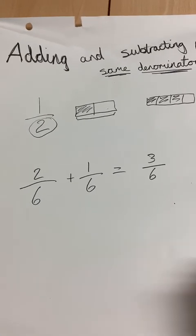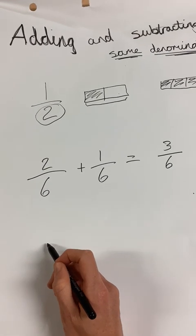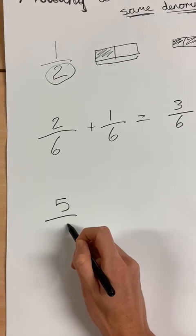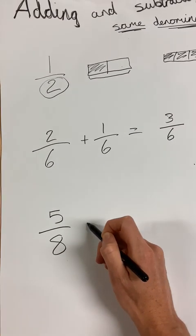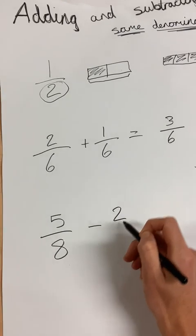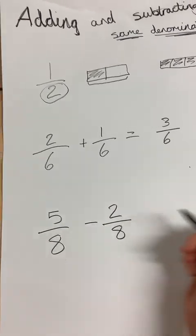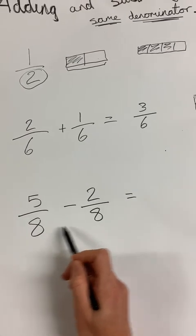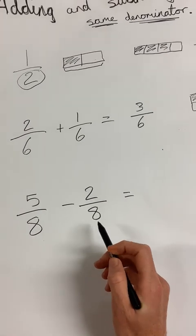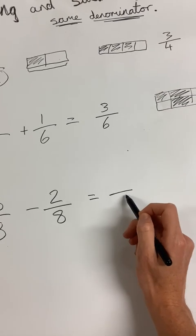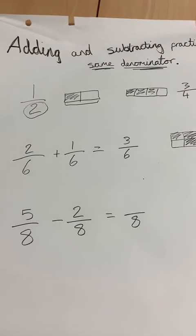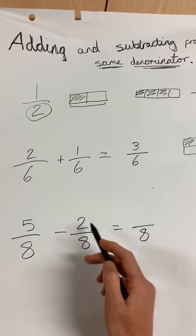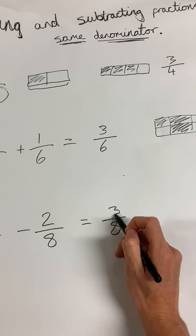So if we had five eighths, and we decided to take away two eighths, because they have the same denominator, that keeps it simple, and we know the answer will have the same denominator. So we can then do five minus two, which gives us three.